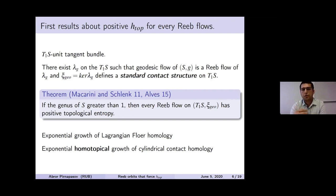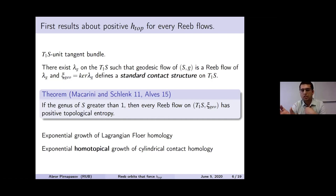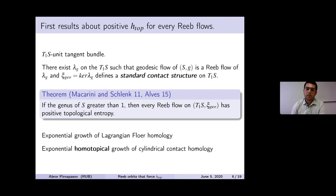Macarini and Schlenk proved a generalization of Dinaburg's result for the Reeb flow category: if you take any higher genus surface and consider its unit tangent bundle with the standard contact structure, then every Reeb flow on this contact manifold always has positive topological entropy. They used Lagrangian Floer homology and showed exponential growth of Lagrangian Floer homology of the tangent fiber, then used Yomdin's theorem to show positivity of topological entropy. Their result is for symplectic Reeb flows. Later, Marcel Alves proved it for C^2 contact forms or C^1 Reeb flows using cylindrical contact homology and exponential homotopical growth.